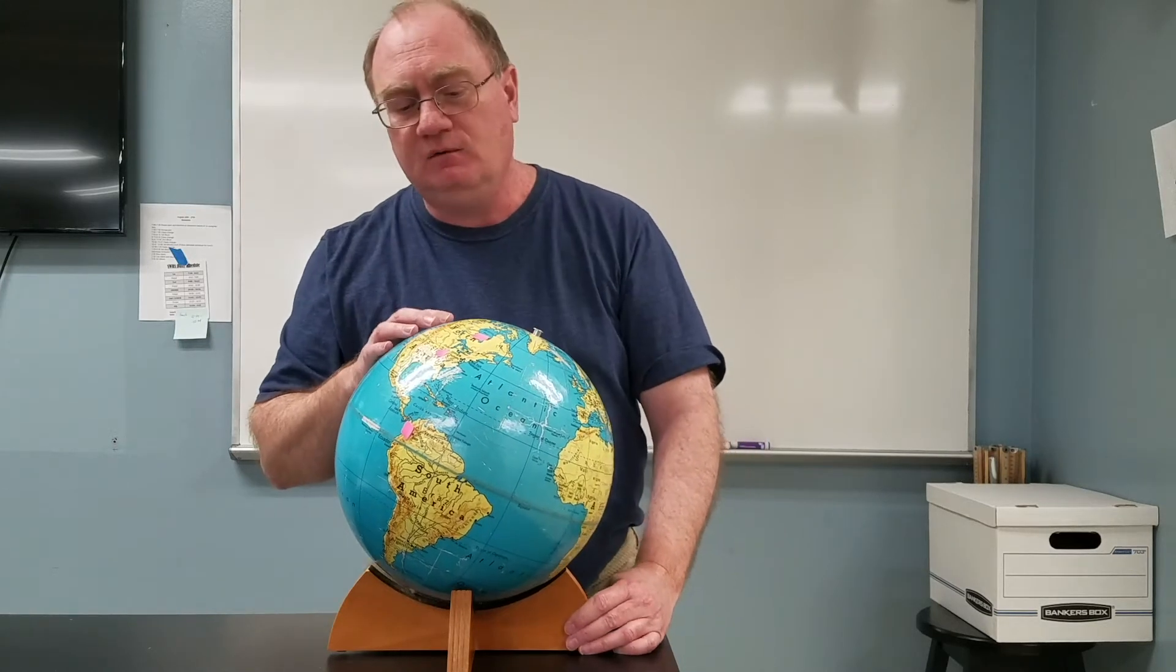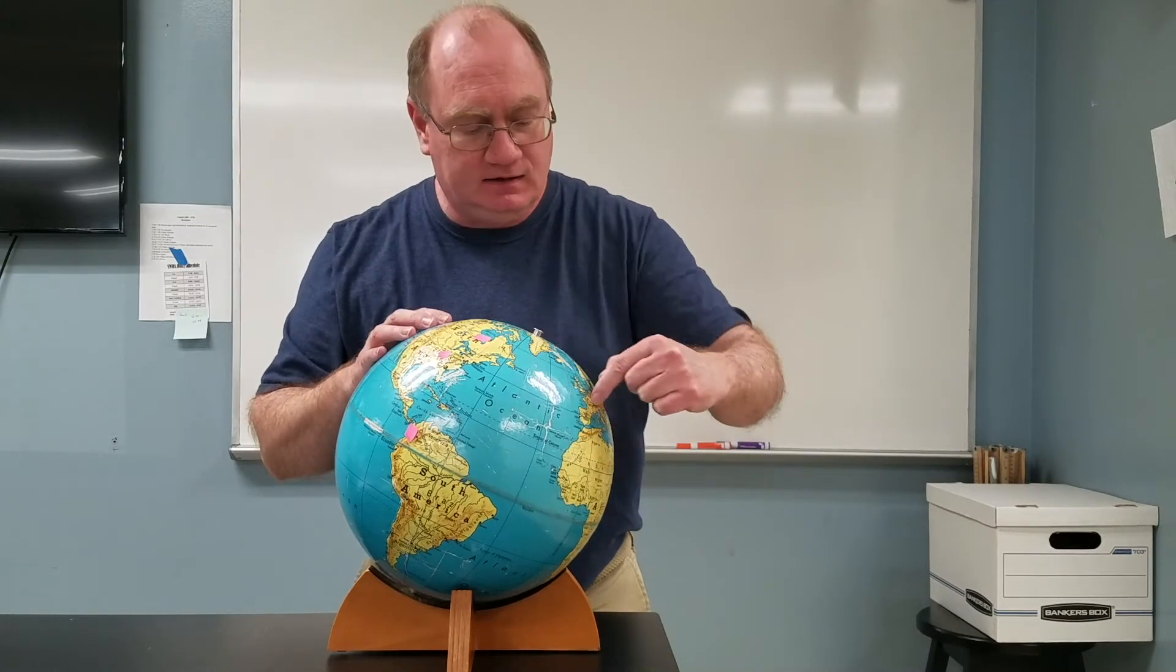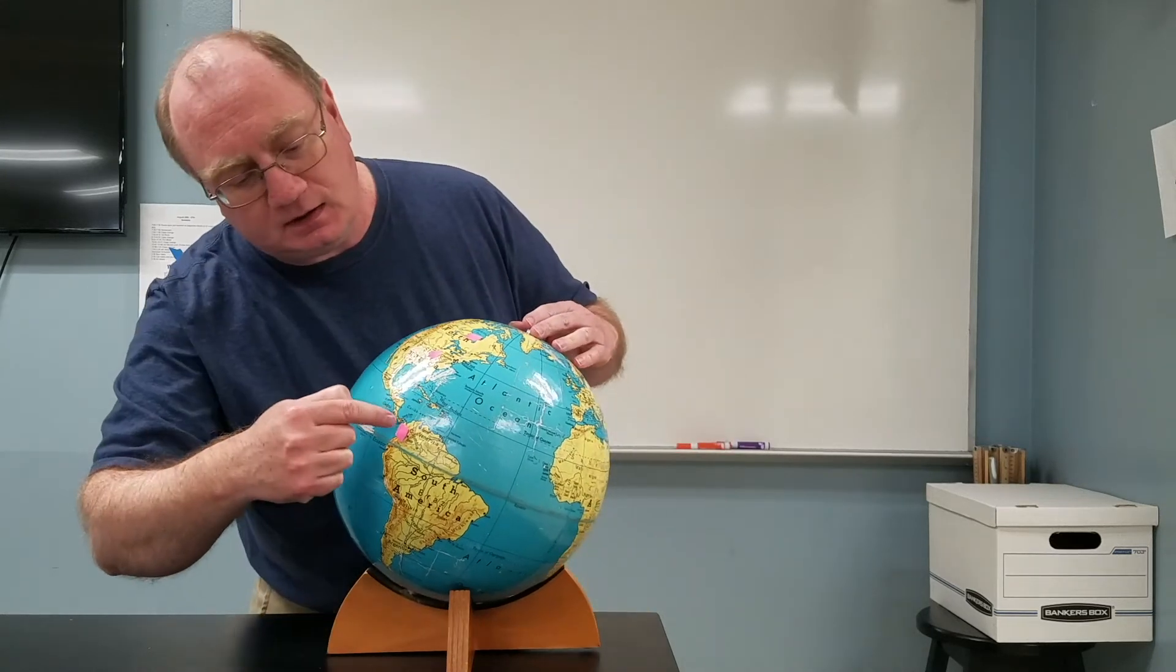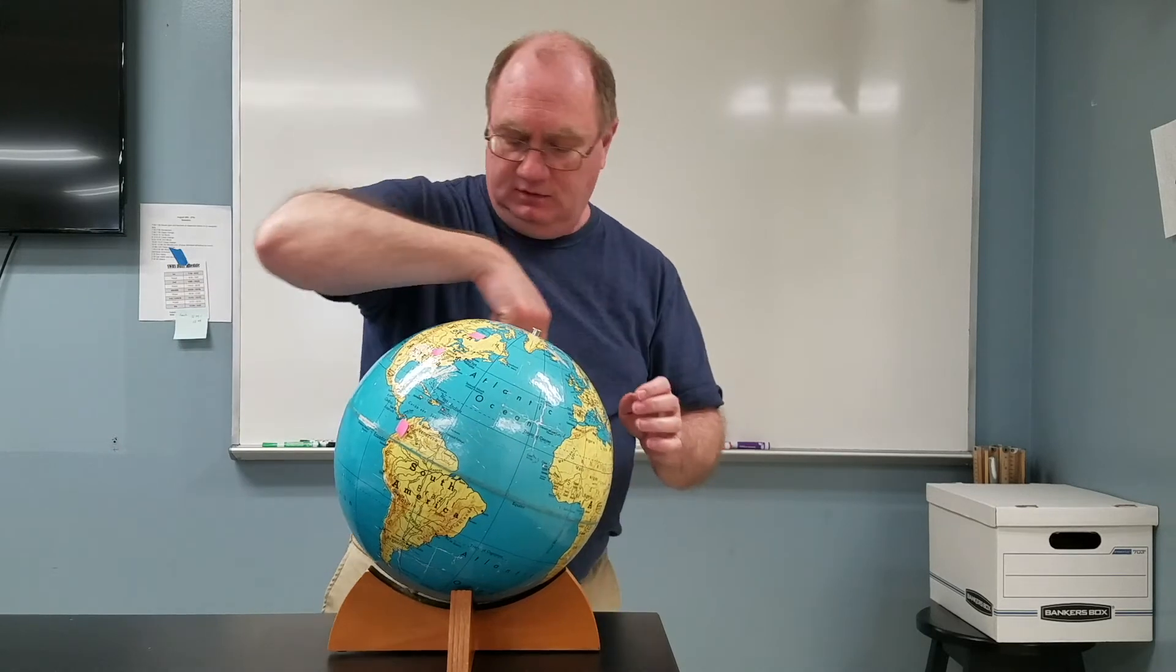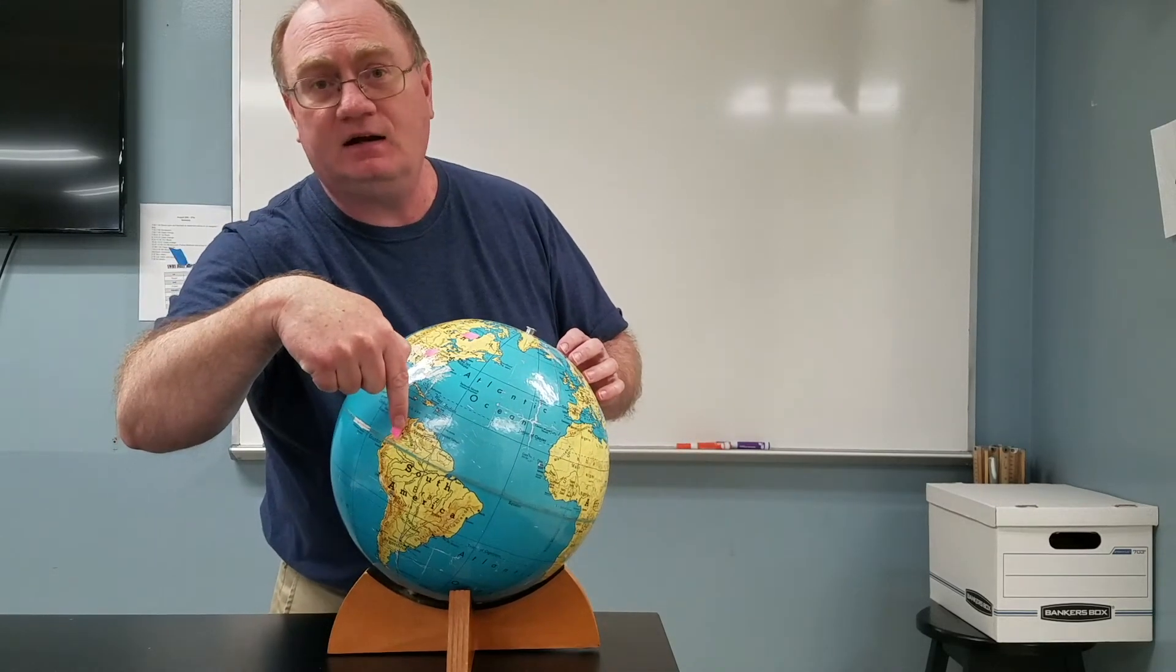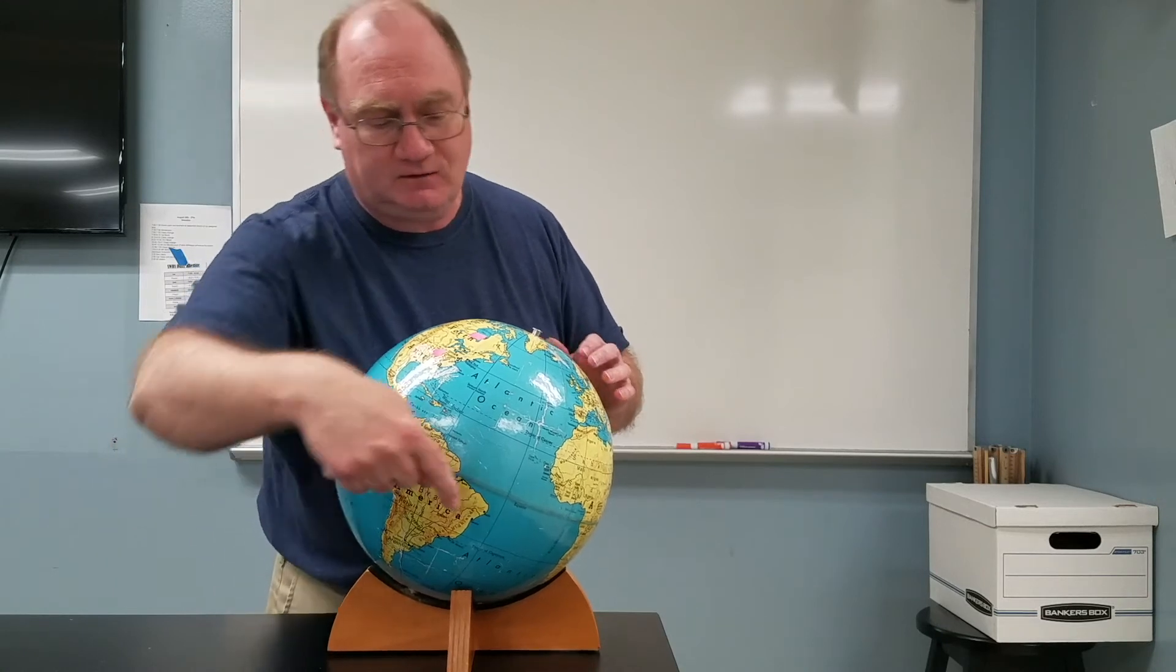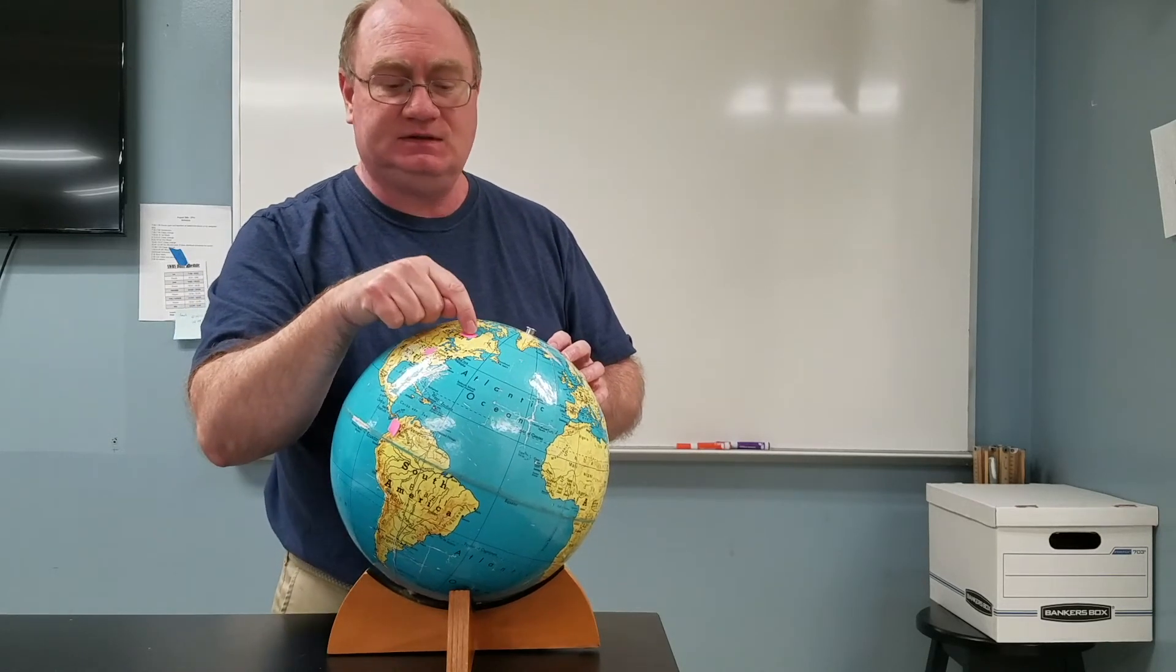But linear speed is quite different. For linear speed, this one goes around this circle, this one goes around a slightly bigger circle, and this one goes around nearly the entire equator. And so since this one actually covers more distance in one day, it has a higher linear speed than this one or this one. This one's actually traveling the slowest linearly, but all three have the same speed angularly.